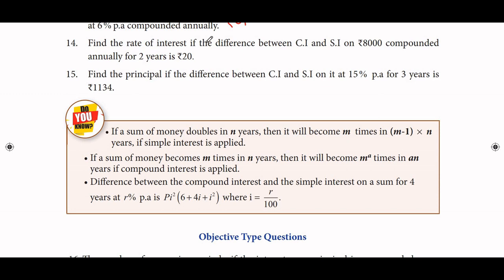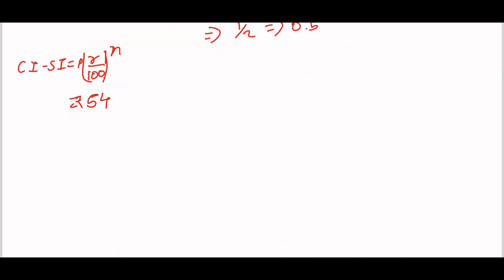Hello friends, welcome to TNBSE Stars channel. This is video number eight, standard term two, mathematics exercise 1.3 part 3. If you have part 1 and part 2, this video covers the 14th sum: find the rate of interest if the difference between CI and SI on ₹8000 compounded annually for two years is ₹20. Using the CI minus SI formula: